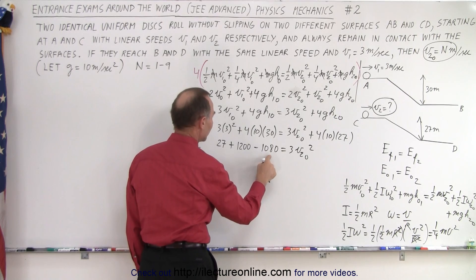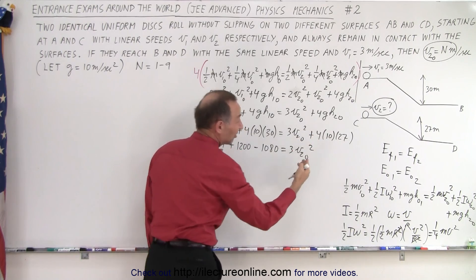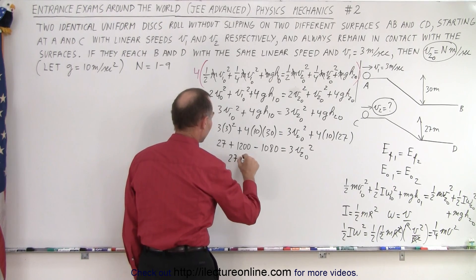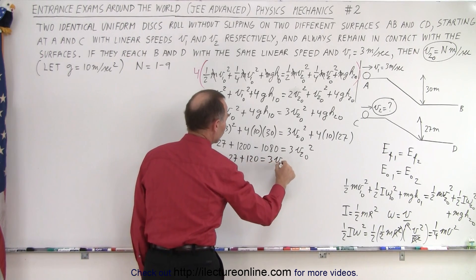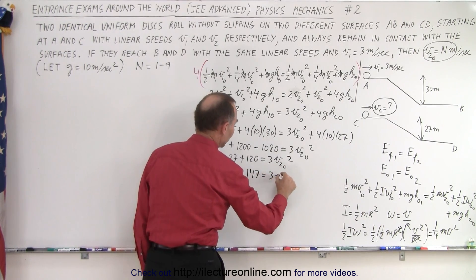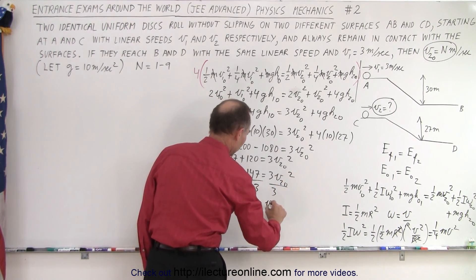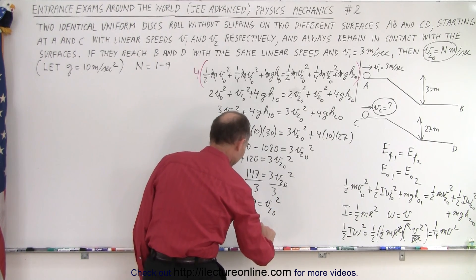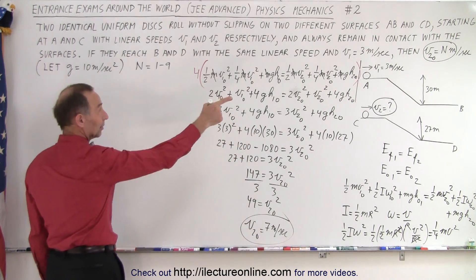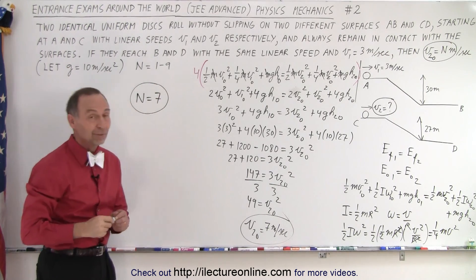Subtracting these two is 120. Essentially you can take a look at this. This is 40 times 30 and 40 times 27. So essentially it's 4 times 40 times 3, which is 120. That's the difference between these two. So 27 plus 120 equals 3 v2 initial squared. And these together is 147 equals 3 v2 initial squared. Dividing both sides by 3, we get 49 equals v2 initial squared. So v2 equals 7 meters per second. And therefore, looking at the equation, n equals 7, which is indeed the correct answer for this problem.